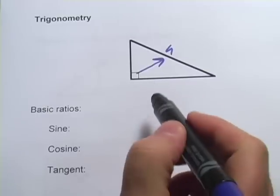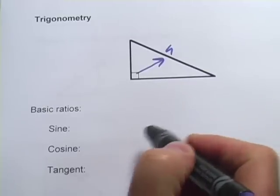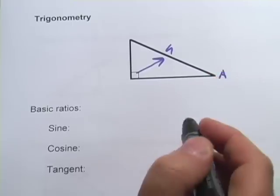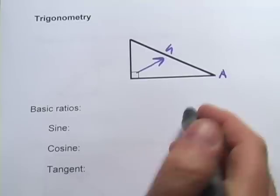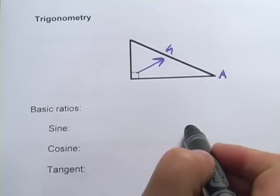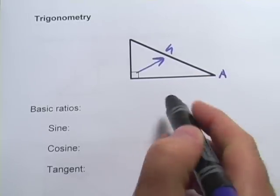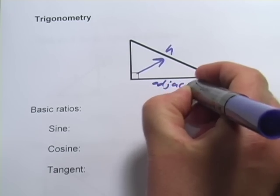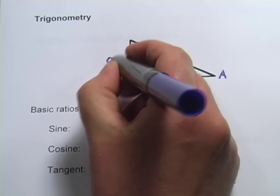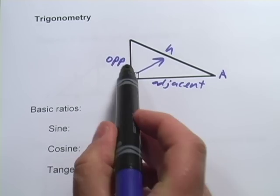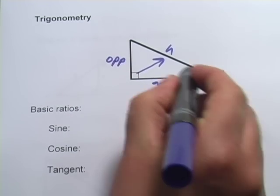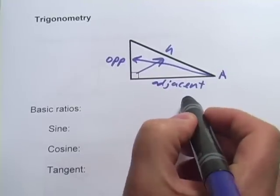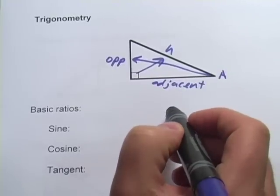Now there are two other sides that we'll give names to depending on our perspective in the triangle. Let's say our perspective was over here at angle A. This is the hypotenuse, and it's always going to stay the hypotenuse. But the other two sides we would call the adjacent and the opposite. And it's pretty clear why the opposite is the opposite, right? Because it's opposite of angle A. Whereas the adjacent is right next to A. And that's what adjacent means. It means next to.